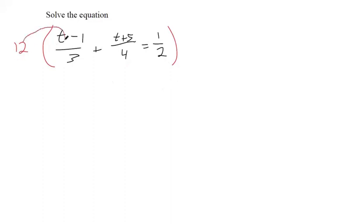When you multiply 12 times this, you can think of it as 12 over 1. These two numbers cross-simplify with each other. That makes 4 and 1 there. So 12 over 1 times this over 3 cross-simplifies to have a 4.